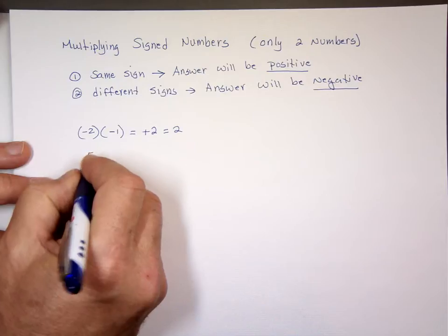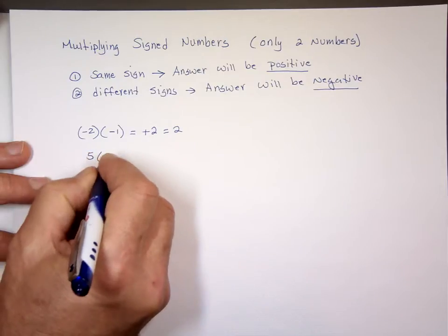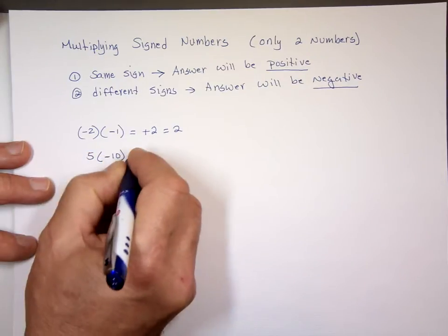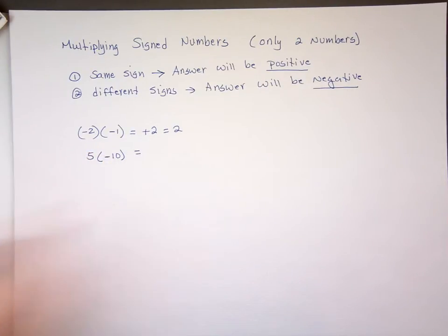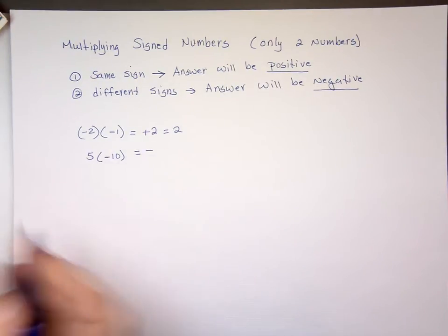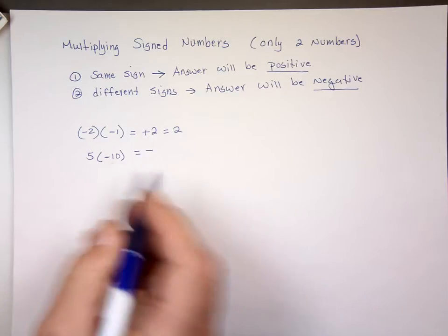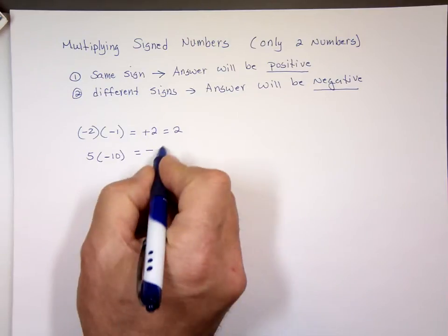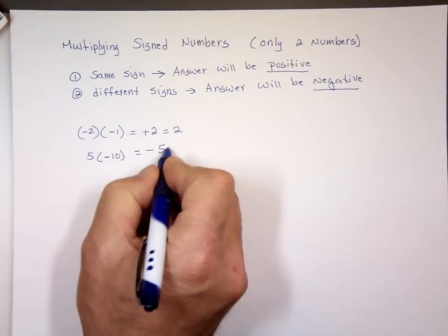Five times a negative ten. Are they the same sign or different signs? Different. The result is negative. Five times ten is fifty, so the answer is negative fifty.